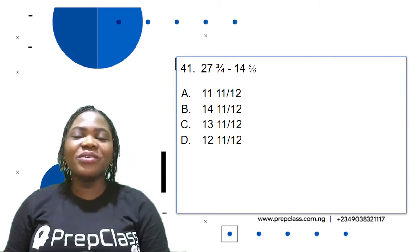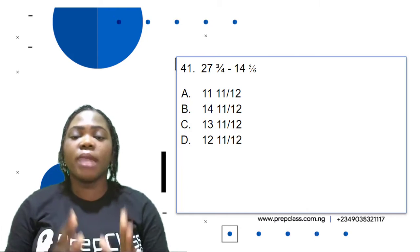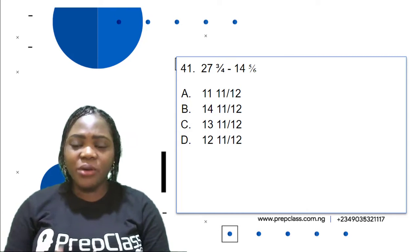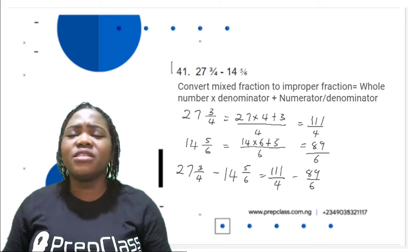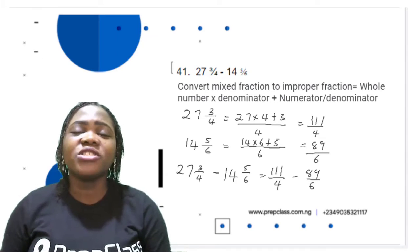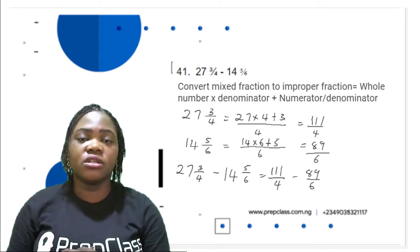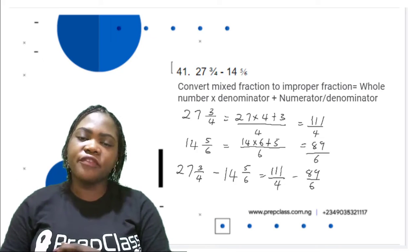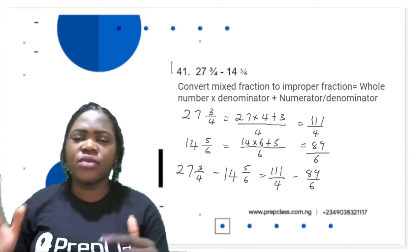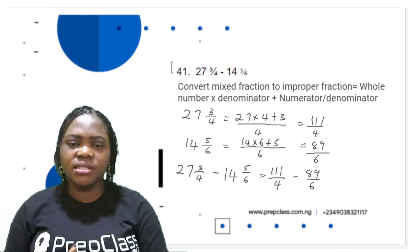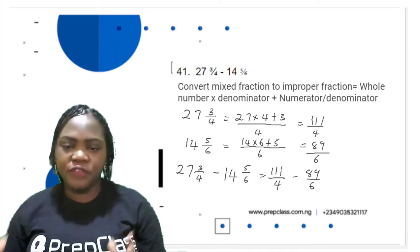Let's move on to the first question. Question 41: 27 and 3 over 4 minus 14 and 5 over 6. These are fractions, and many students think fractions are very difficult — but they are actually very easy. You can see that there is a whole number part and a fraction part, so these are mixed fractions.